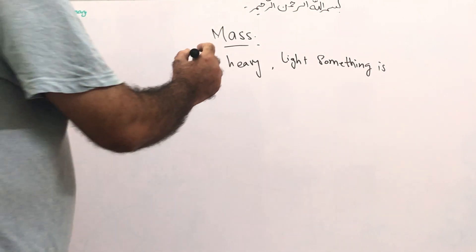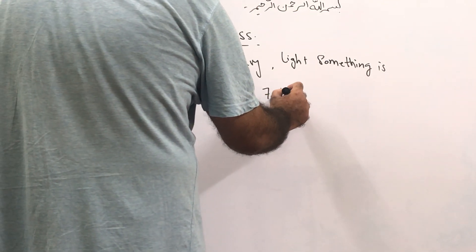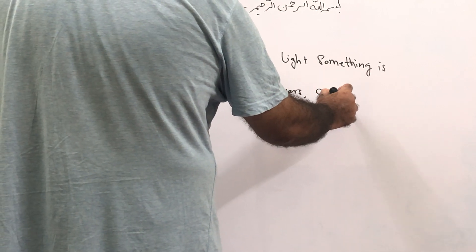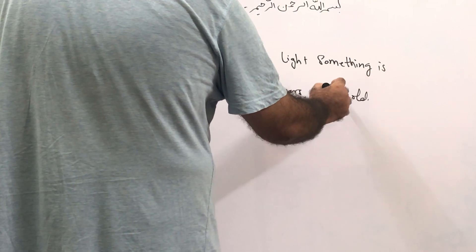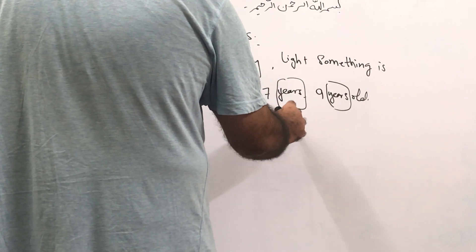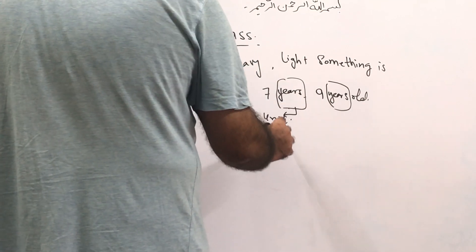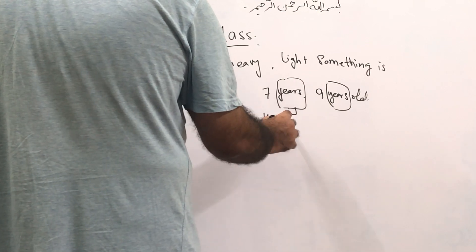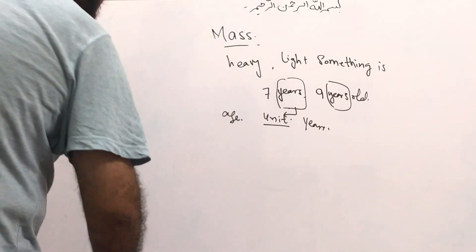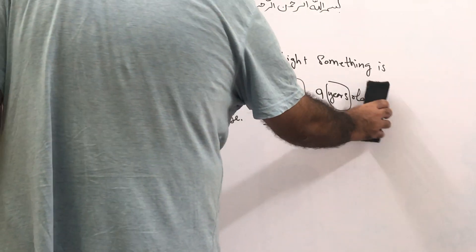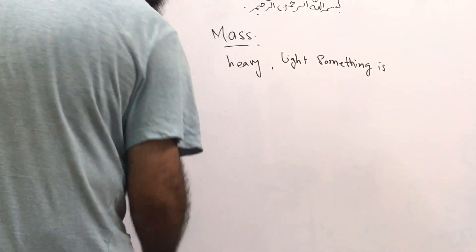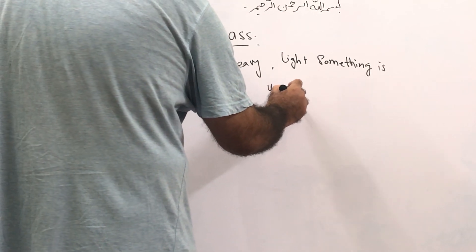When you tell your age to someone, you say 'I am 7 years old' or 'I am 9 years old.' You are telling your age in terms of years — this is called a unit. So the unit of age is years. Similarly, mass also has a unit.